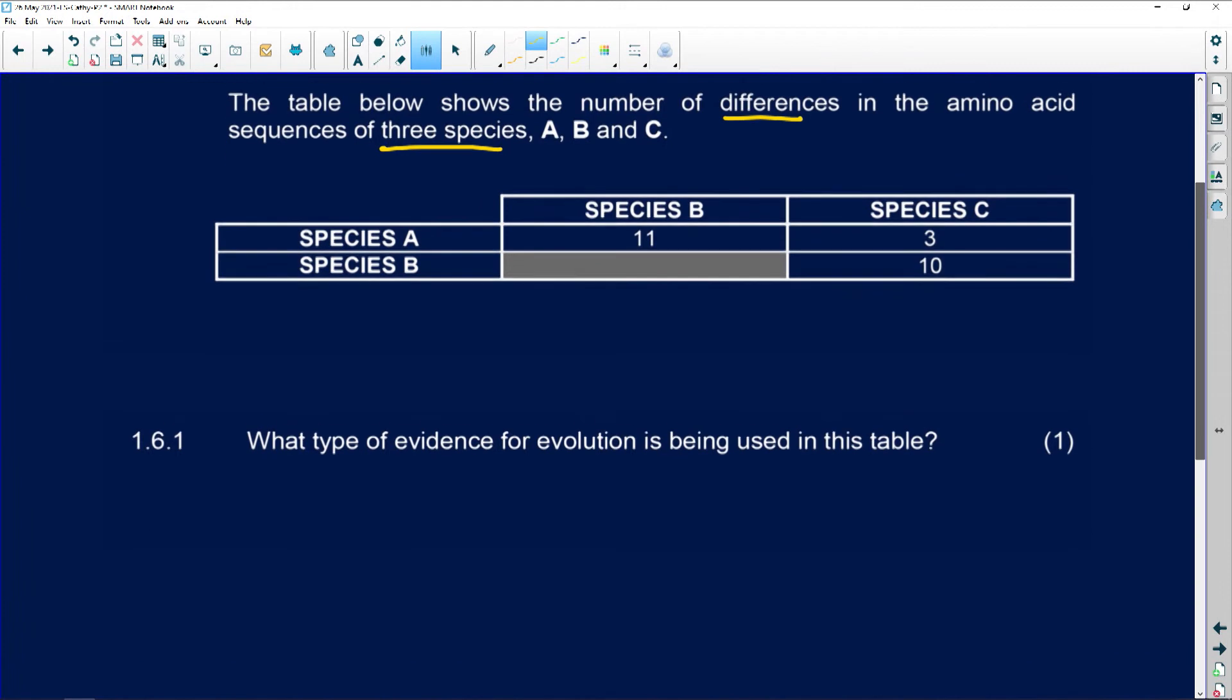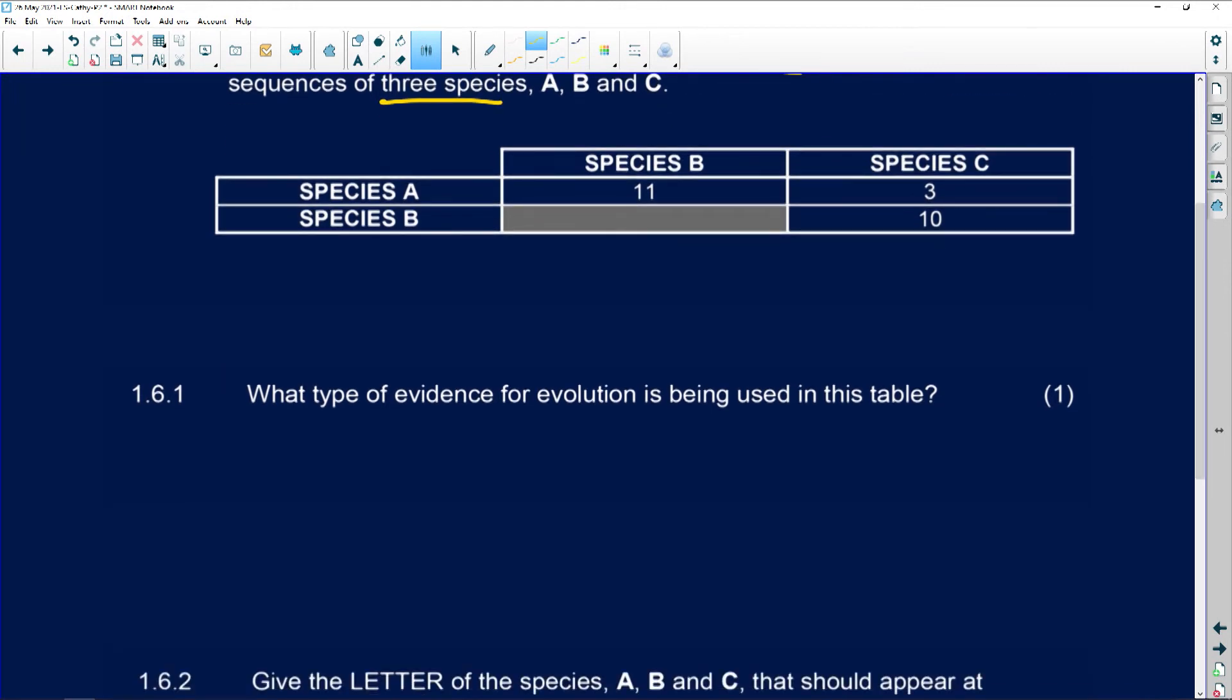Let's just have a look here. There's species A, and the difference between A and B is 11. And the difference between A and C is only three.